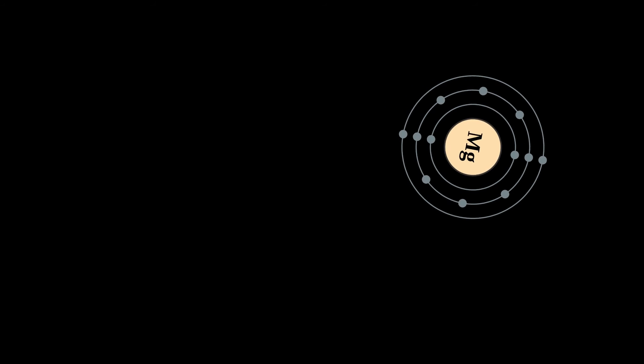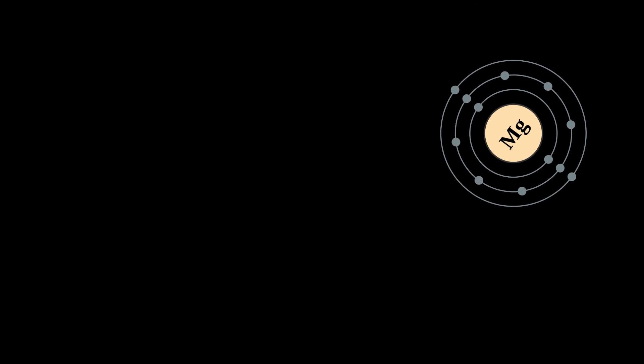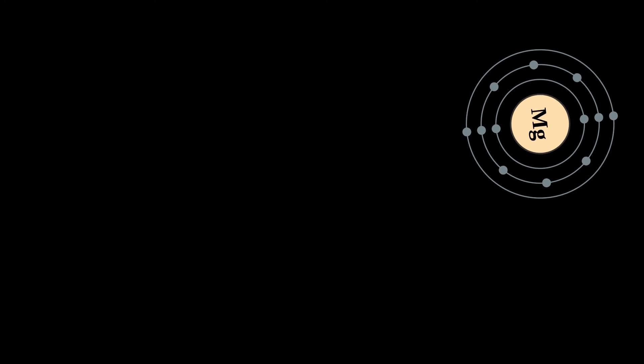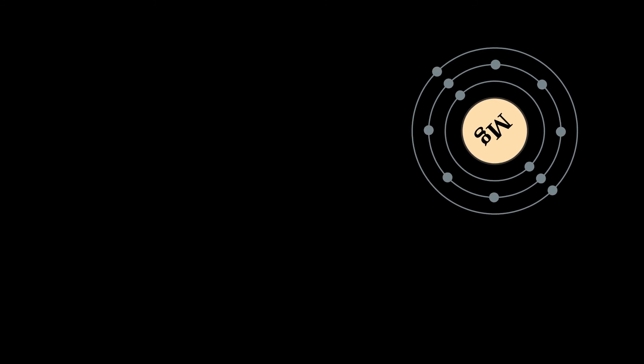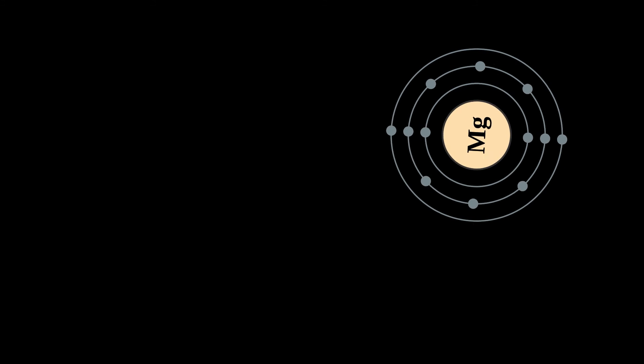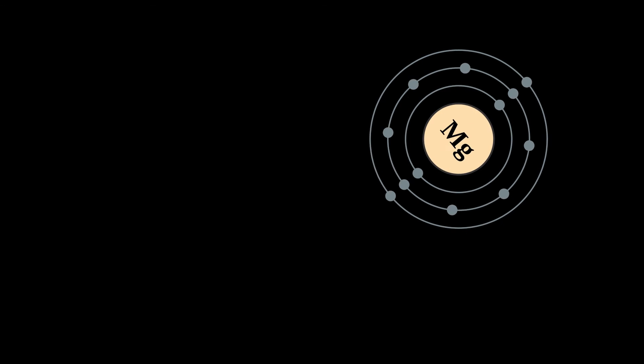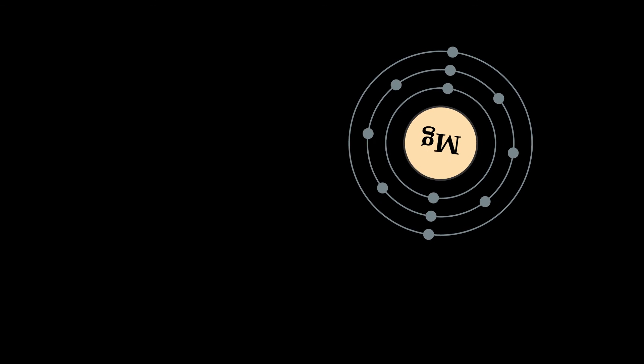Magnesium is the 11th most abundant element by mass in the human body and is essential to all cells and some 300 enzymes. Magnesium ions interact with polyphosphate compounds such as ATP, DNA, and RNA. Hundreds of enzymes require magnesium ions to function.